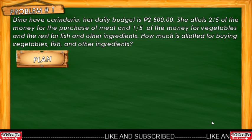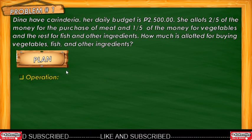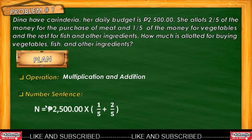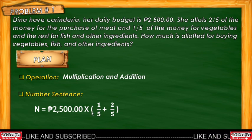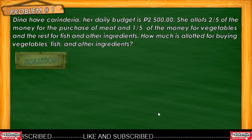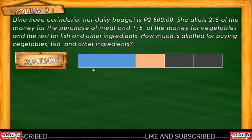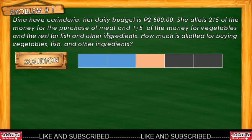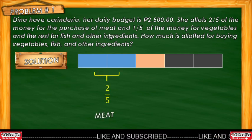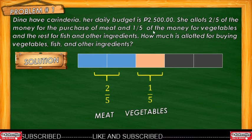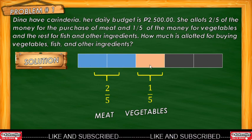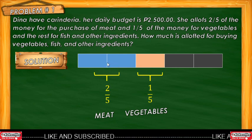Now let's plan the problem. What operation will be used? We're going to use multiplication and addition. The number sentence is: 2,500 multiplied by (one-fifth plus two-fifths). Now let's illustrate the problem. We have 2,500. She allotted two-fifths for meat — that is two parts — and one-fifth for vegetables — that is one part of the whole. The whole is divided into five parts.